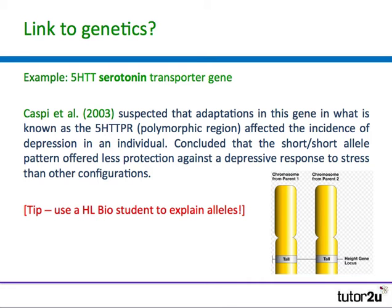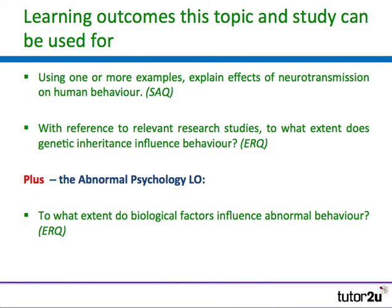Alleles are an alternative form of a gene that can be passed on from parents to offspring. This diagram shows the height gene locus with alleles labelled tall and tall. So you have a link between the neurotransmitter question and genetics, which you'll be able to exploit when you get to a learning outcome on genetics.